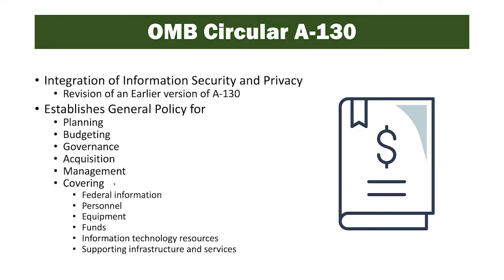OMB Circular A-130 was recently revised. This revision integrates information security and privacy controls under one document that establishes a general policy for planning, budgeting, governance, acquisition, and management that covers federal information, personnel, equipment, funds, information technology resources, and supporting infrastructure and services. Essentially, A-130 provides a requirement for government systems to be developed following information security and privacy control requirements that is directly tied to funding of organizations.